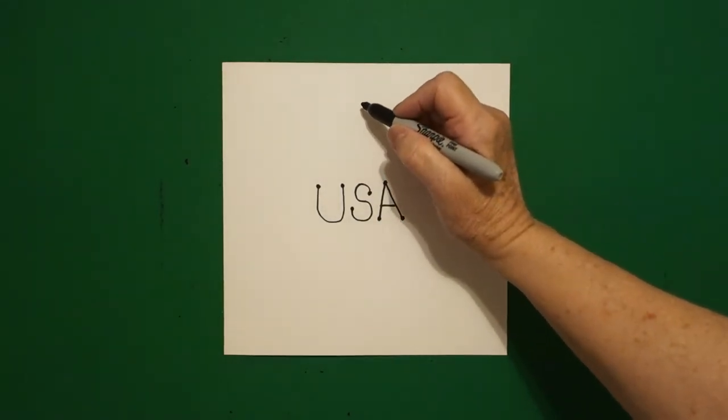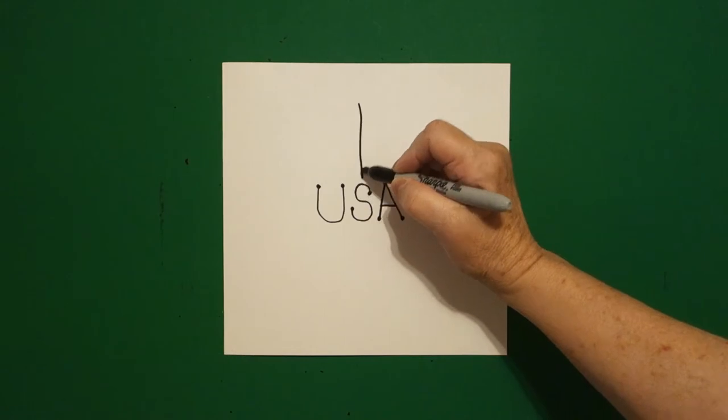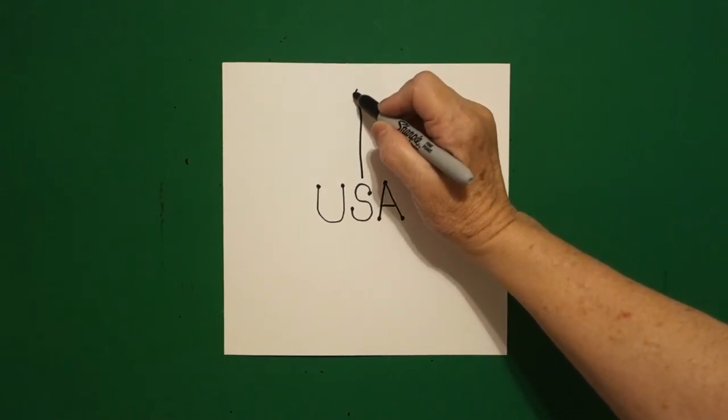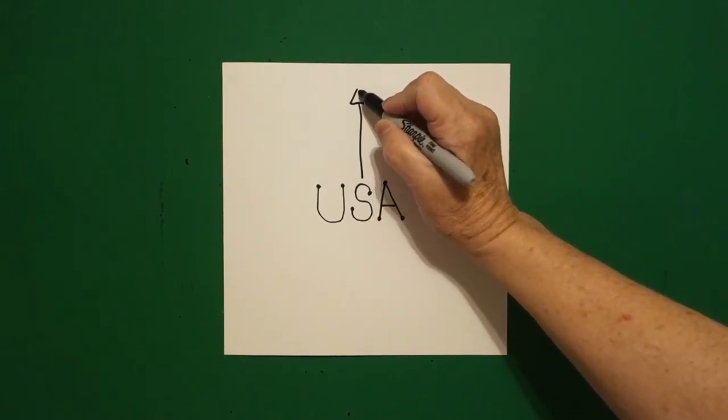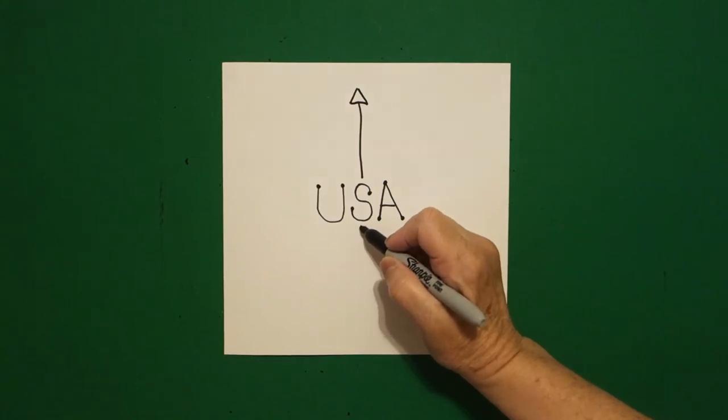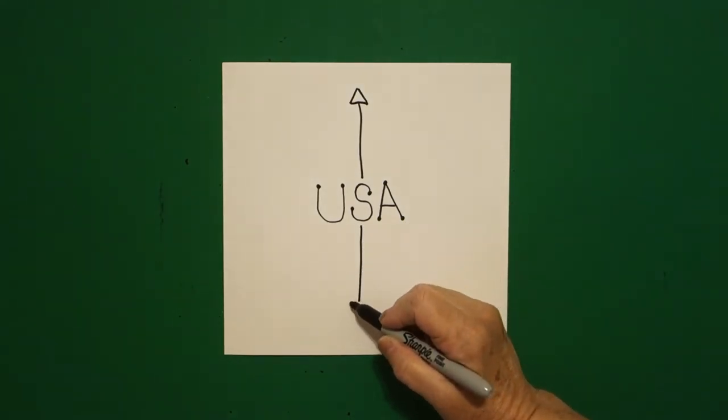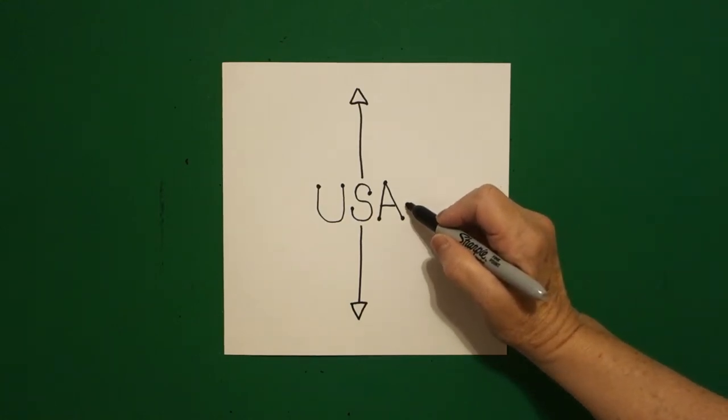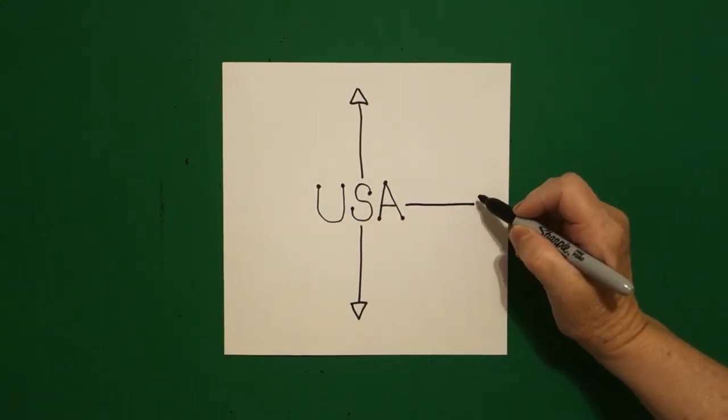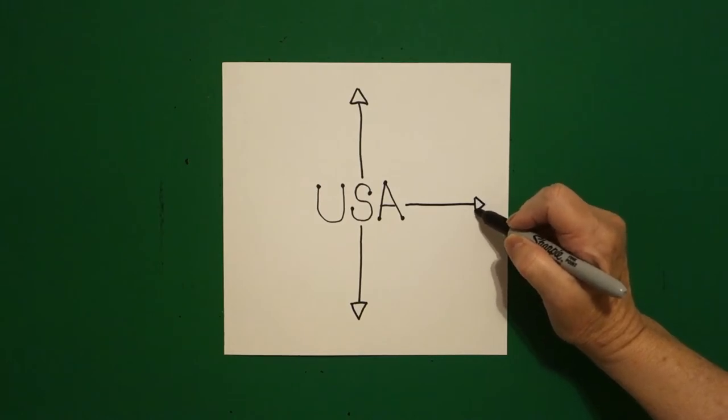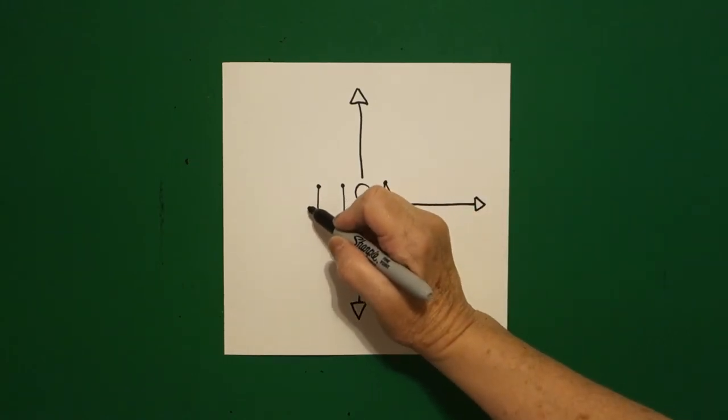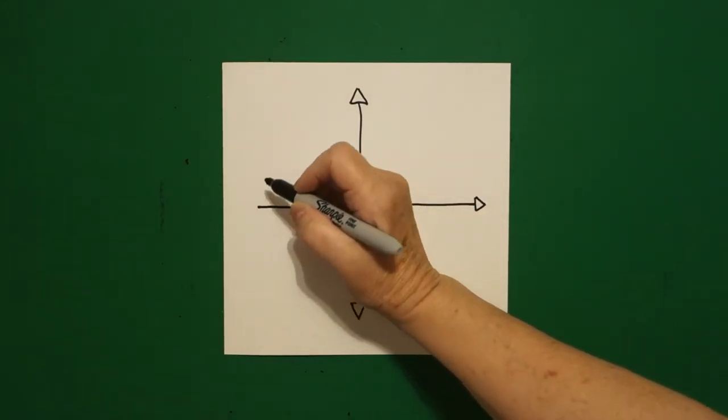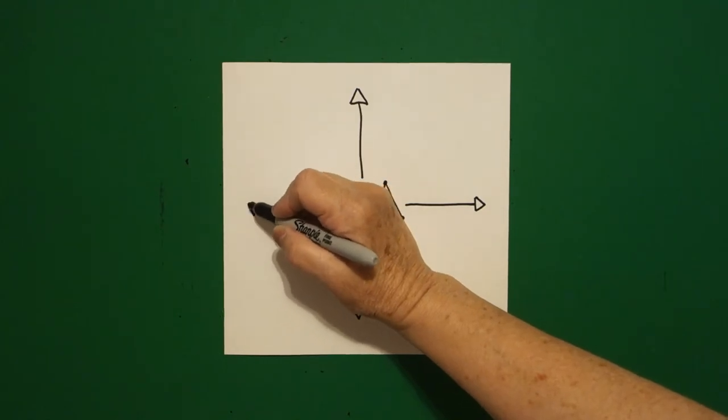Using my S as my midpoint, I'm going to draw a straight line down, and come up to the top, draw a triangle, jump over, straight line down, draw a triangle. Come over to the right, straight line out, draw a triangle, come to the left, straight line out, draw a triangle.